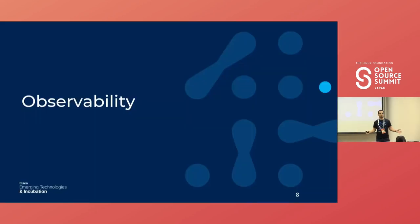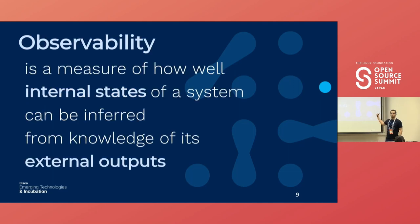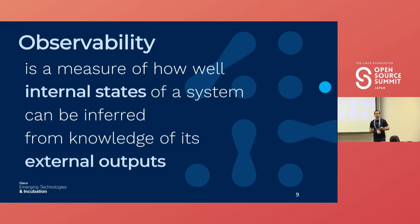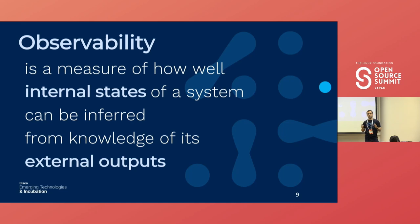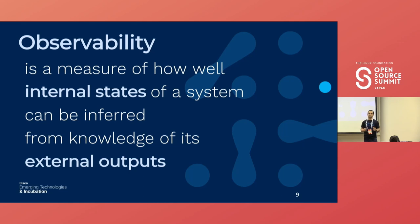Let's start by talking about observability in general. What is observability? This is the Wikipedia definition: observability is a measure of how well the internal state of a system can be inferred from the external outputs of your system. So if you have a system, it can be in one of many different states. If you can know which state your system is currently in by looking at the external outputs, you can say that your system is observable.